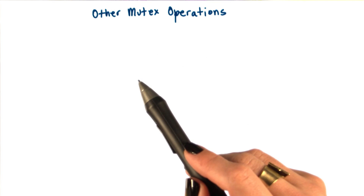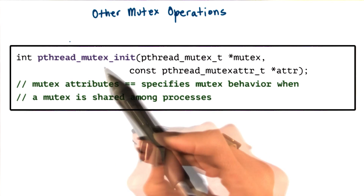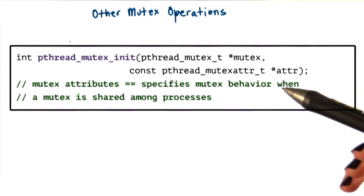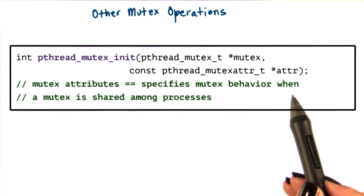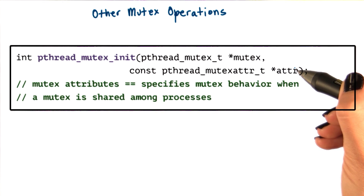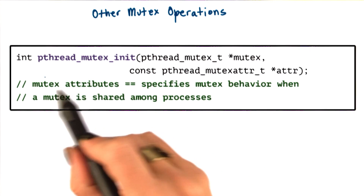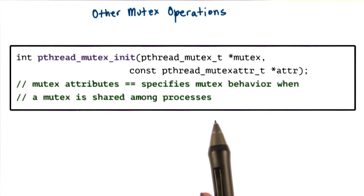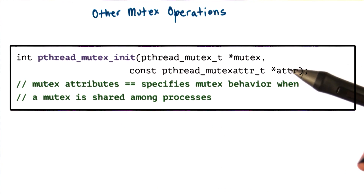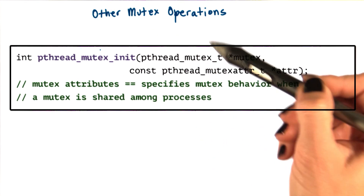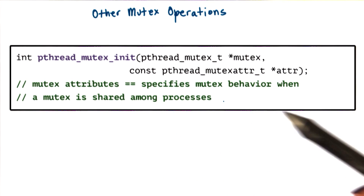Pthreads supports a number of other mutex-related operations worth highlighting. First, mutexes must be explicitly initialized. This operation allocates a mutex data structure and also specifies its behavior. It takes as an argument a mutex attribute variable, which is how we specify the mutex behavior. By passing null as this argument, we can specify the default behavior for mutexes. Or we can set one or more attributes — for instance, pthreads permits mutexes and condition variables to be shared among processes. The default behavior makes a mutex private to a process, visible only among threads within that process, whereas we can explicitly modify that behavior to make the mutex shared with other processes.